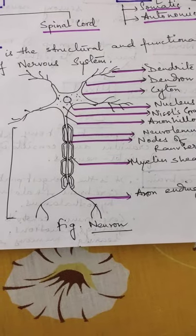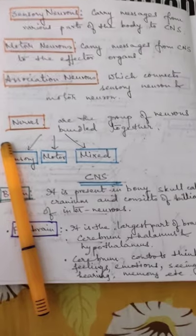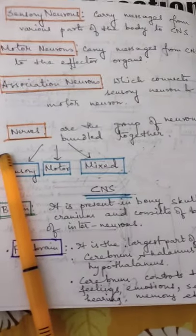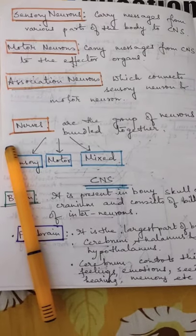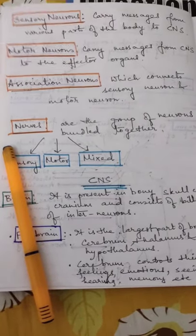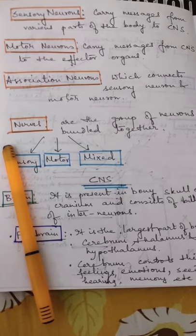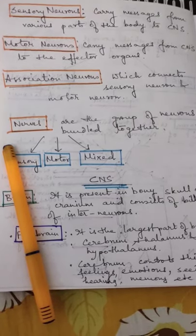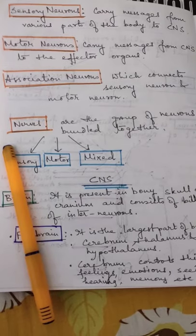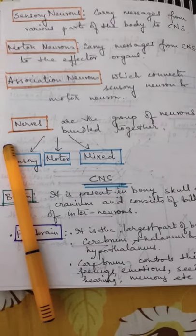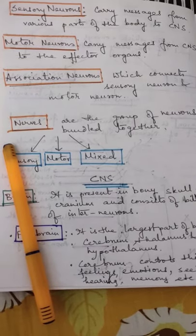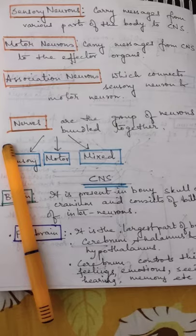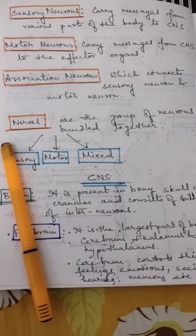Now there are three kinds of neurons: sensory, motor, and association. Sensory neurons carry messages from various parts of the body to central nervous system. Motor neurons do the opposite - they carry messages from central nervous system to the effector organs like muscles and glands. Association neurons connect sensory neurons with motor neurons.